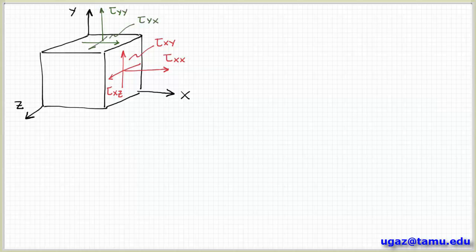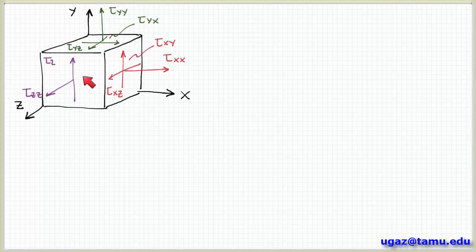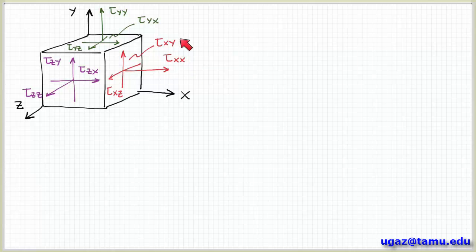I can do the same thing in the other directions. On the top face, this face has a normal in the y direction, so the normal stress is tau yy, and then I have two shearing components, tau yx and tau yz, due to forces acting in the x and z directions. On the front face, this has a normal in the z direction, so I have components tau zz as the normal stress, and shear stress components tau zy and tau zx due to forces acting in the y and x directions respectively. This shows the orientations of these stresses relative to both the surface orientation and the direction of the applied force.